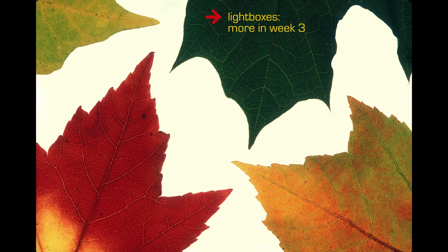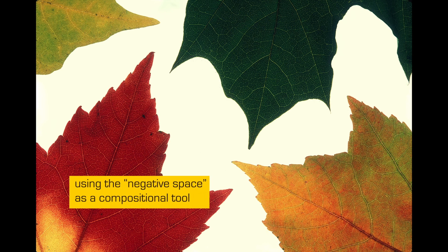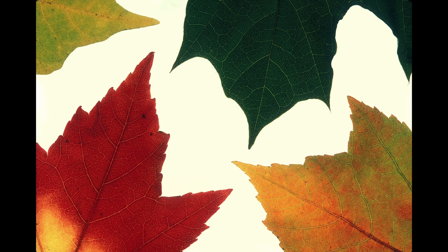The light box itself is an important compositional element in this image because it's giving us a very strong negative space between the leaves. It could be an interesting thing to play around with — using the background as part of your composition — something to think about.